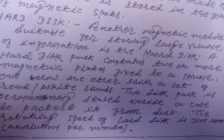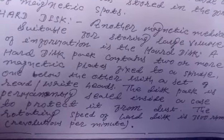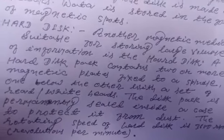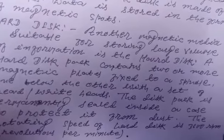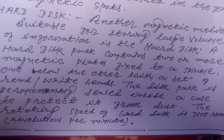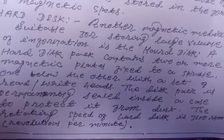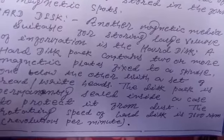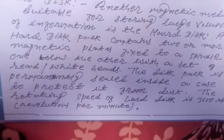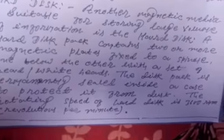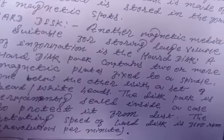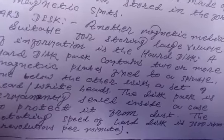The disk pack is permanently sealed inside a box. This sealed case protects the disk from dust. The rotating speed of a hard disk is 3600 RPM — revolutions per minute.